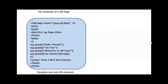Hello friends, welcome back to another session of web technologies. In today's class I'm going to discuss the anatomy of a JSP page. JSP stands for Java Server Pages, and it is a kind of scripting language in which we can embed Java code along with HTML elements. It is simply a regular web page with JSP elements and template text.